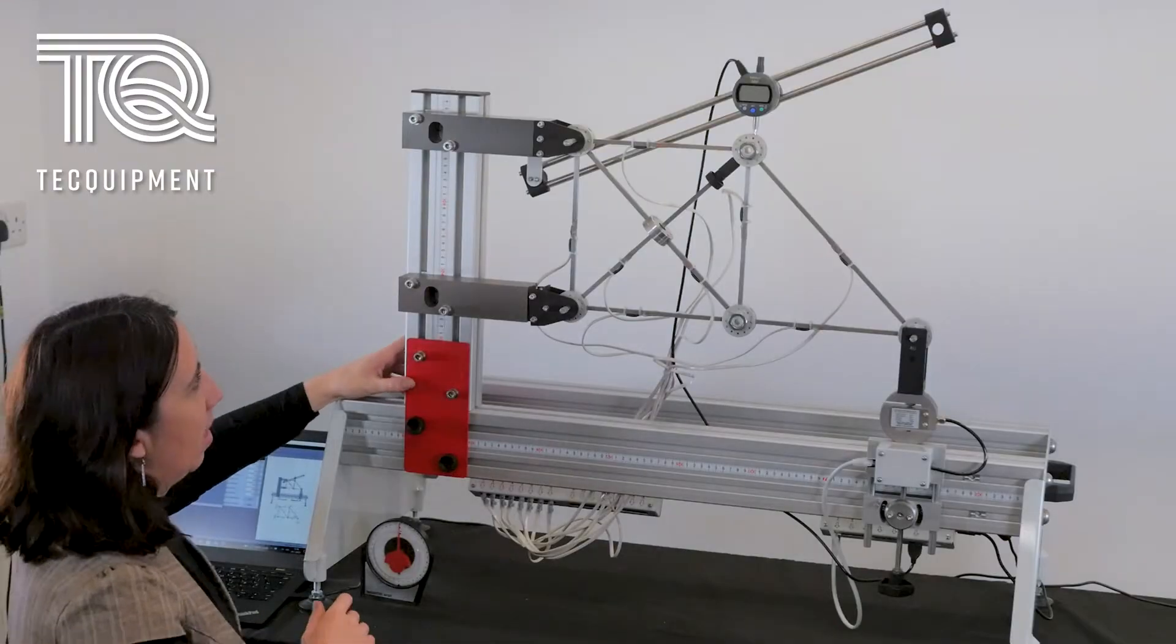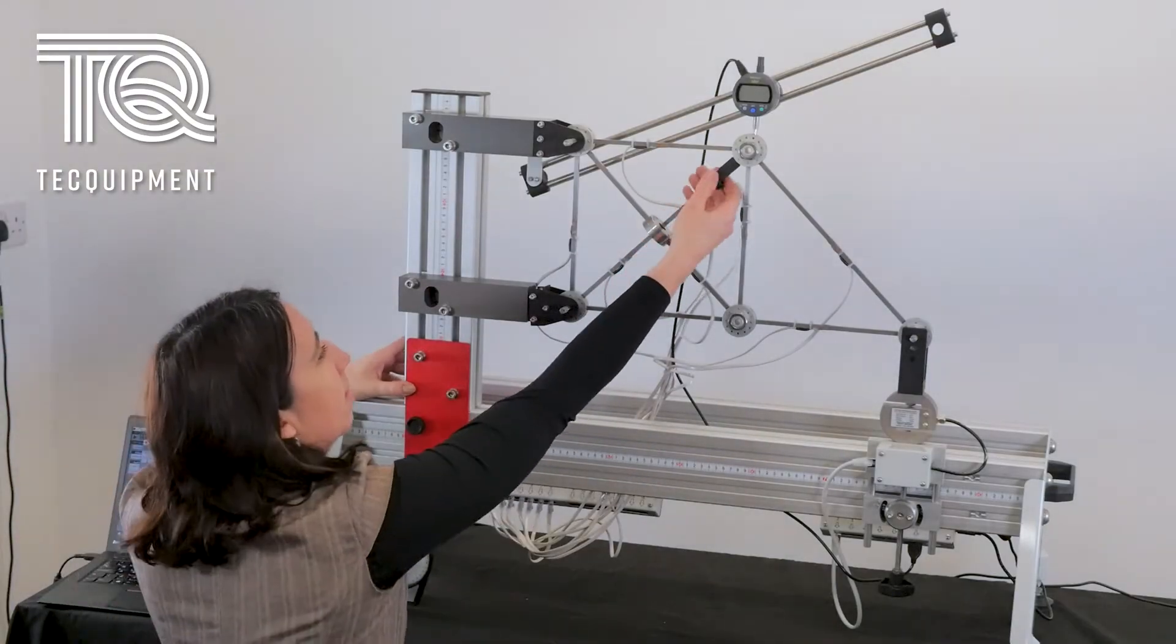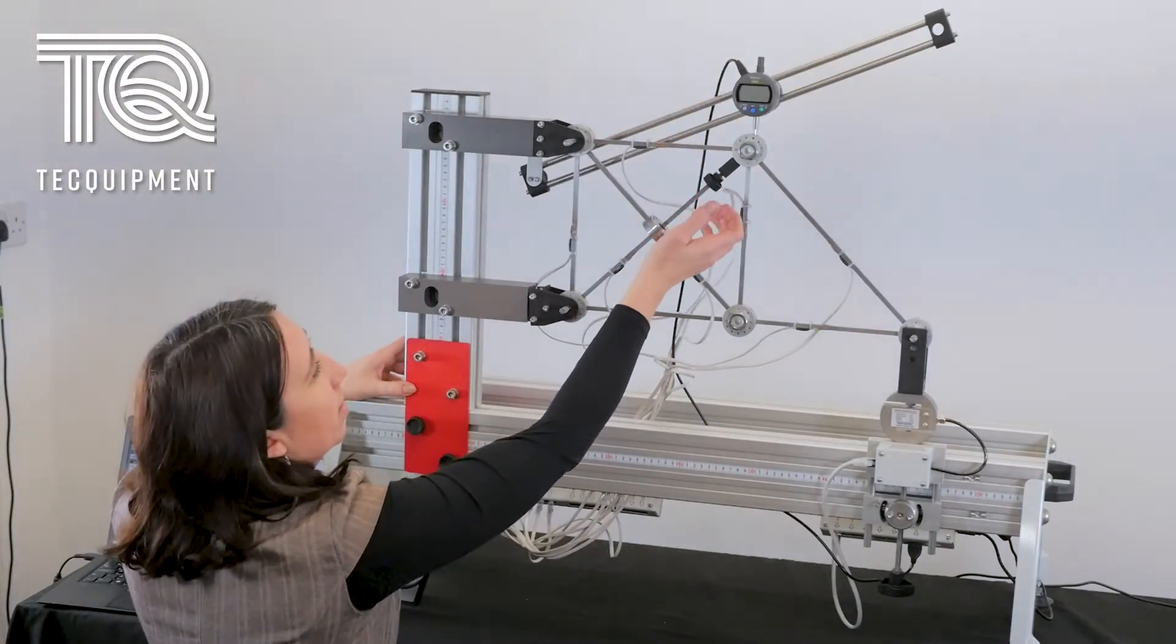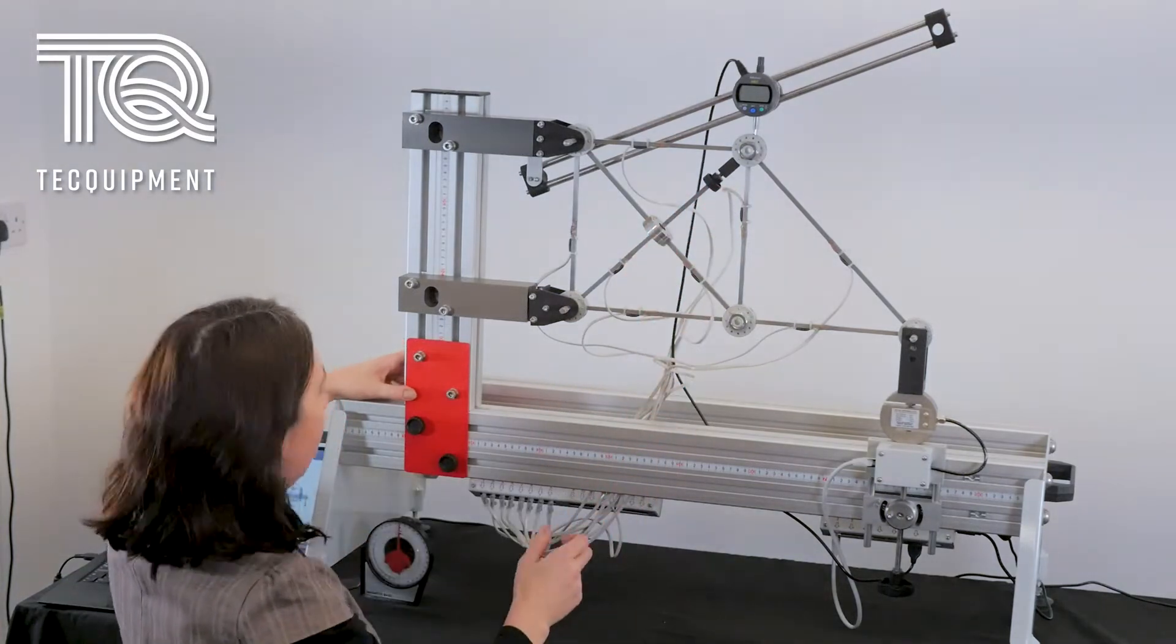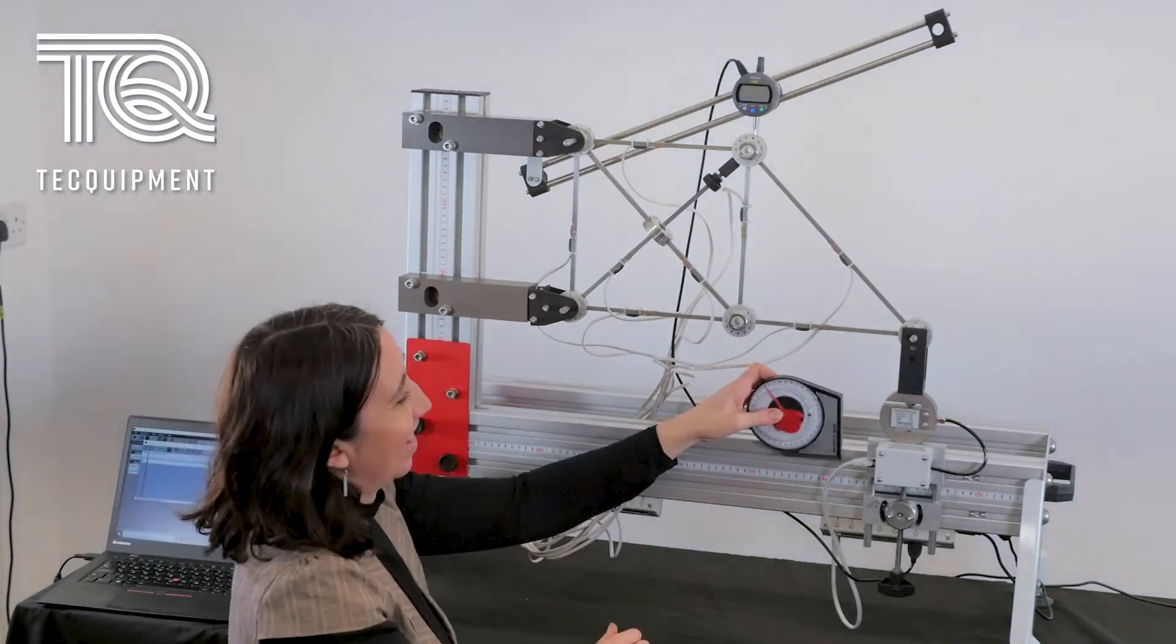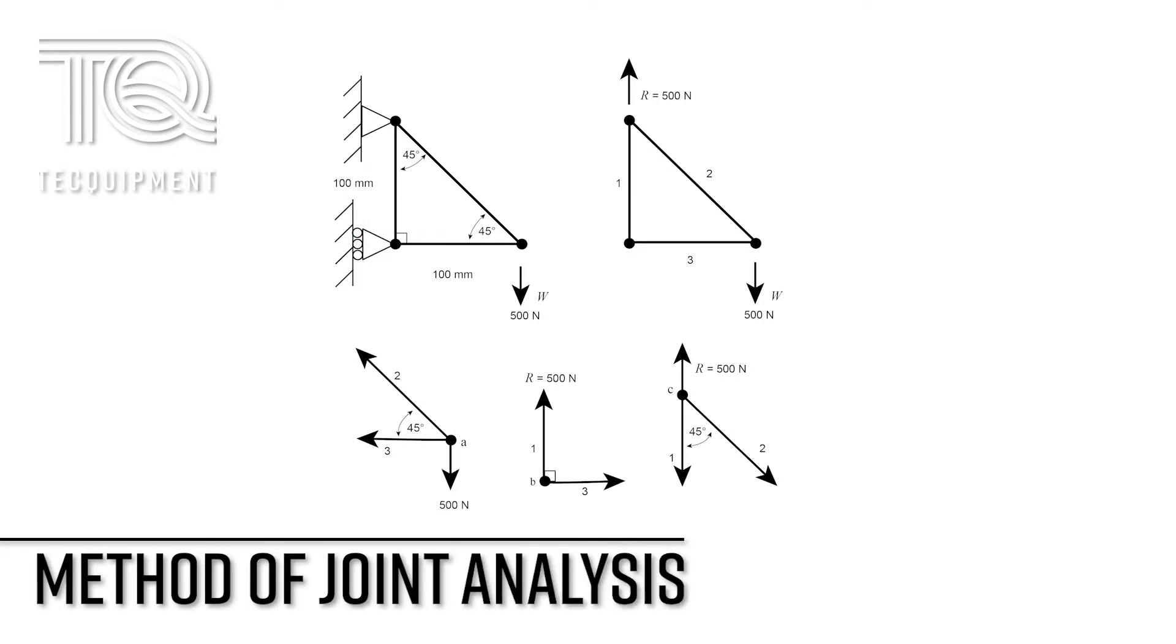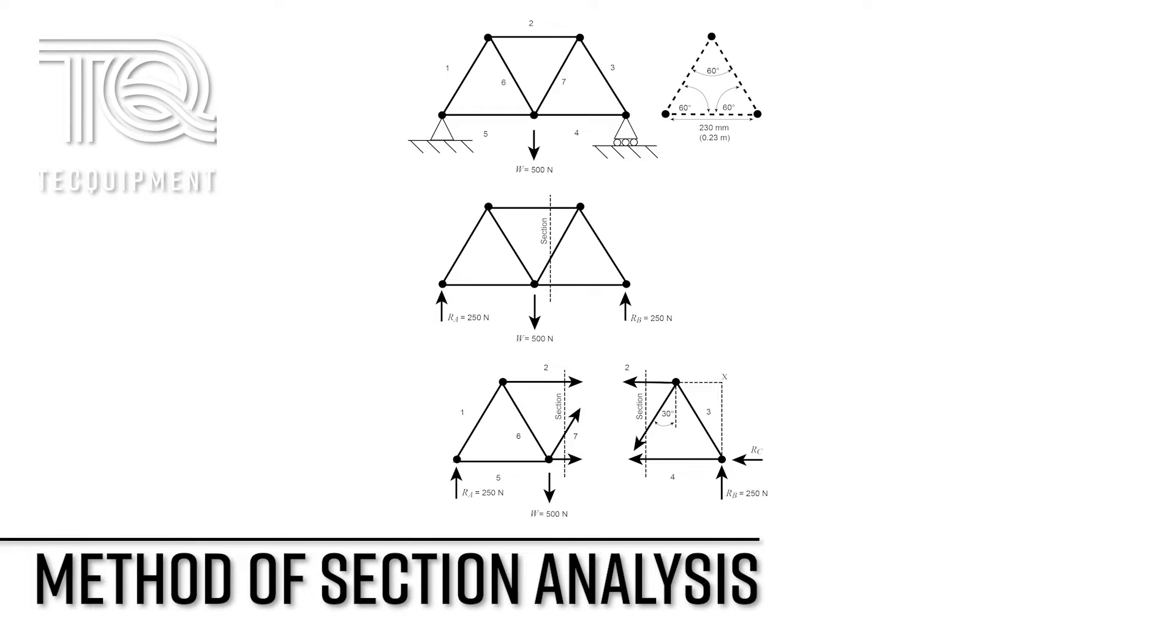Using this experiment, students can try out different statically determinate and indeterminate structures to understand the forces and deflections, and learn about member forces by trying out different joints and methods of sections. Using the strain energy method, you can then establish the advantages or disadvantages of using both truss versions.